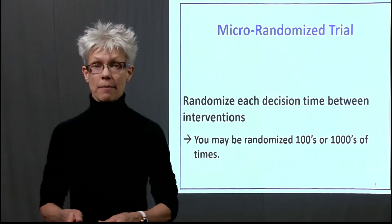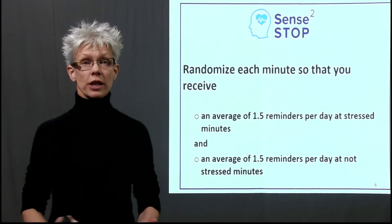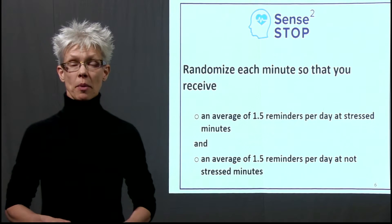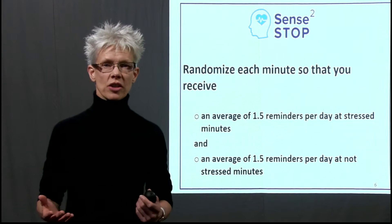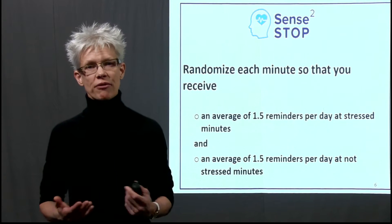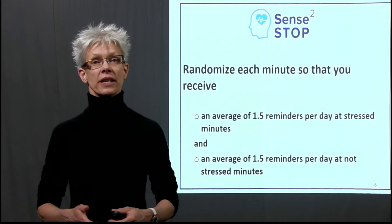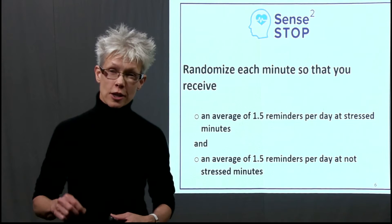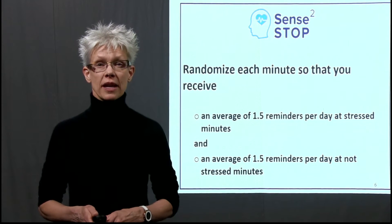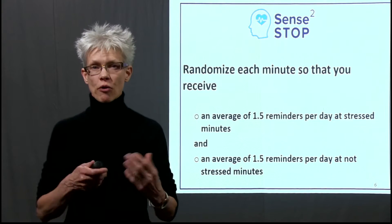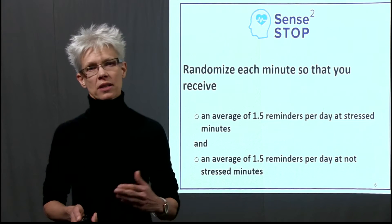In the context of Sense to Stop, that means every minute during a 10-hour day one is being randomized. We choose these probabilities so that across days, on average, one and a half messages will occur — about three messages every two days when you're currently stressed, and around three messages every two days when you're currently not stressed. Since randomization occurs every minute of a 10-hour day, the randomization probabilities are quite low. The whole purpose is that we don't want to overburden someone with many messages.